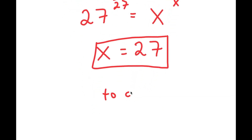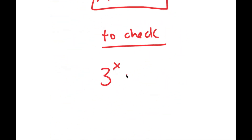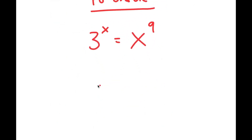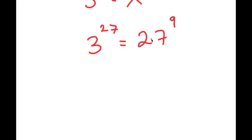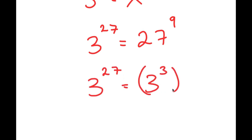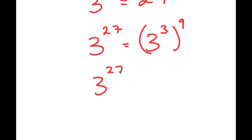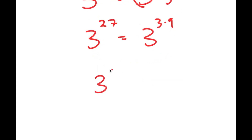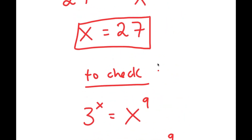To check, I plug x equals 27 into 3 to the power of x equals x to the power of 9: 3 to the power of 27 equals 27 to the power of 9. Since 27 equals 3 to the power of 3, the right side becomes 3 to the power of 3 to the power of 9, which equals 3 to the power of 27. So 3 to the power of 27 equals 3 to the power of 27 — this confirms x equals 27 is correct.